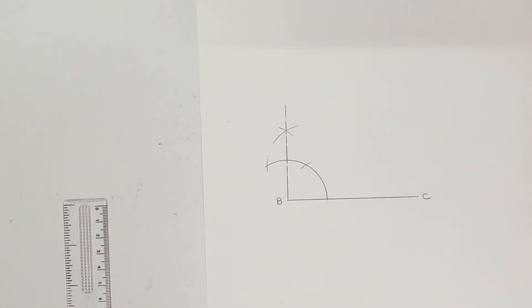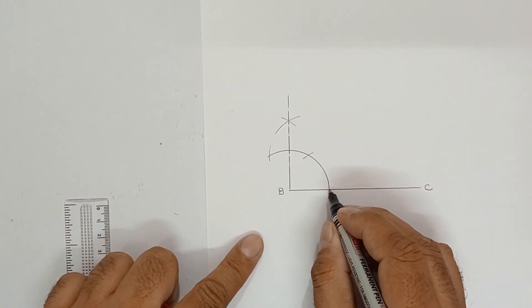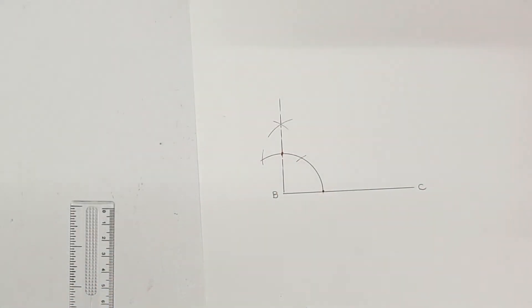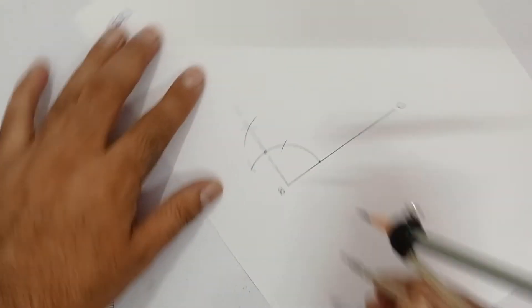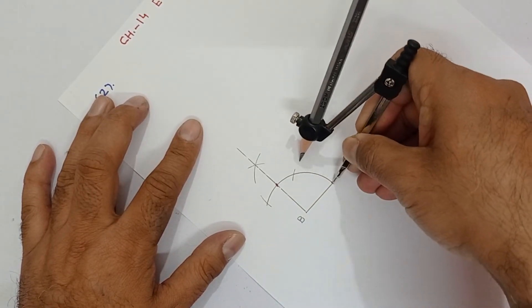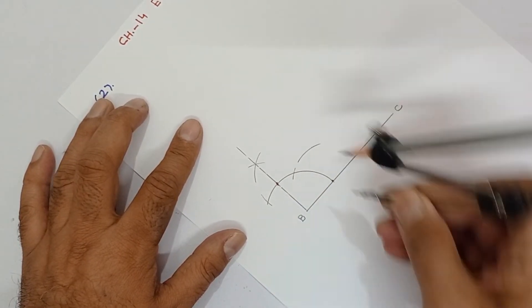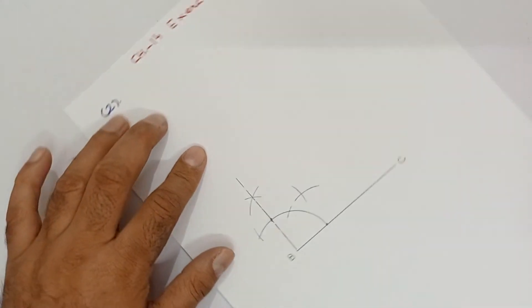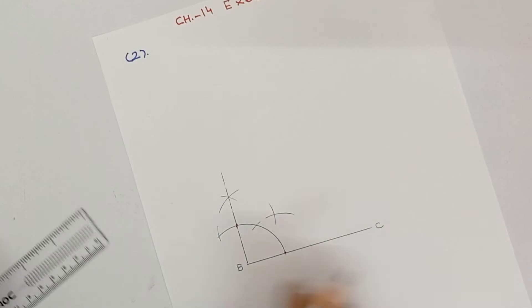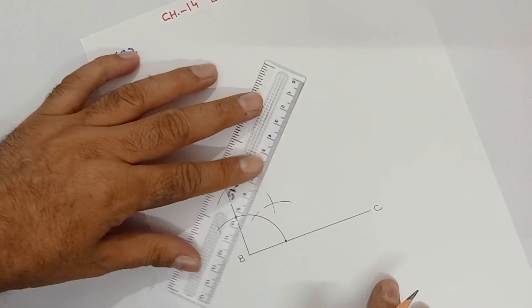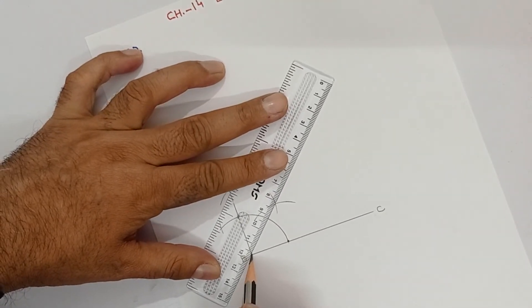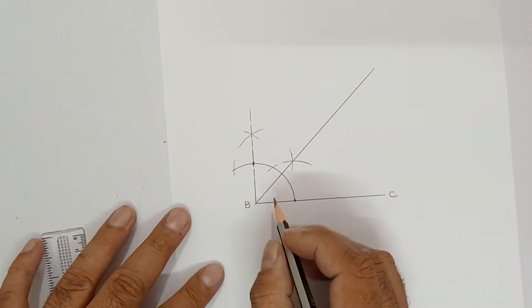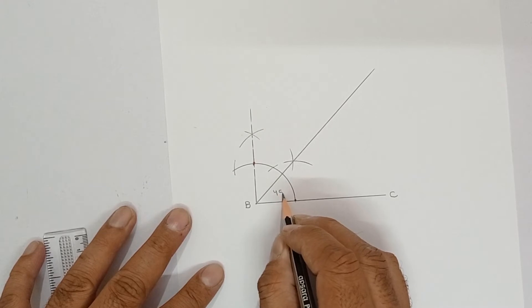Which angle do you have to draw? 45. So, once from 0 and once from 90, on both points, keeping the compass, you have to bisect. Keep the compass as open as it was. Arc from here and arc from here. This will be 45 degree. So extend this forward. This way.